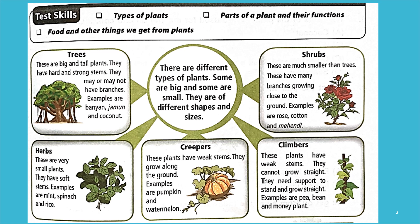Shrubs are much smaller than trees. They have many branches growing close to the ground. Examples are rose, cotton, mehendi, and most flowering plants — plants that give us flowers are mostly shrubs. Then come herbs — these are very small plants with soft stems. Examples: mint, spinach, rice, and coriander.